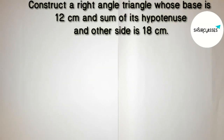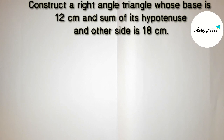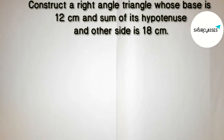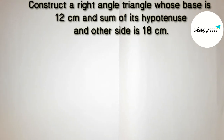Welcome to SI Share Classes. Today in this video we have to construct a right angle triangle whose base is 12 centimeter and the sum of its hypotenuse and other side is 18 centimeter. I'm going to construct this right angle triangle using one simple method, so please watch the video till the end.